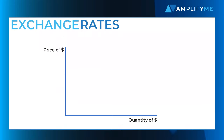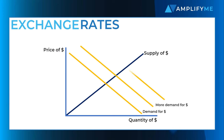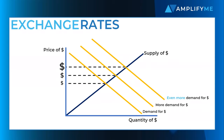You may have heard that currencies can be strong or weak. The strength of a currency is simply determined by the age-old laws of supply and demand. A currency becomes stronger relative to other currencies when the demand for that currency outweighs supply. There are a lot of explanations as to why a currency becomes stronger relative to others.